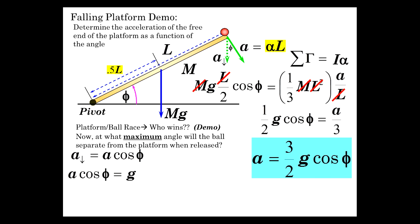So A cosine of phi is G. That's the condition. When does the vertical acceleration equal G? So that's 3 halves G cosine of phi. That's A times cosine of phi. So A cosine of phi. So 3 halves G cosine squared of phi. G's go away. And we have cosine squared of phi is 2 thirds. Cosine of phi is square root of 3 over 2. And we get our answer.